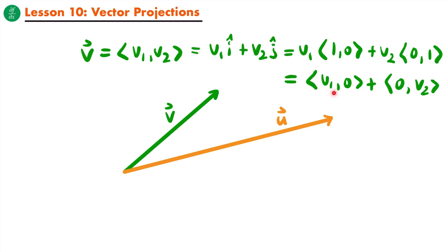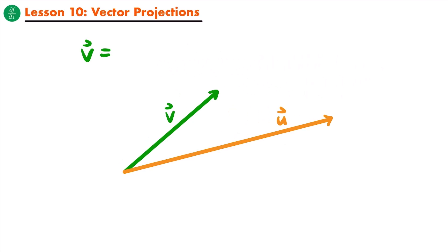Now that's not really anything new — you've seen this before — but keeping this idea in mind is going to be helpful for understanding what we're focusing on in this lesson. What we're going to want to do is break up a vector into two vector components, but not necessarily involving the standard unit vectors. Instead, we're going to represent a vector as the sum of two vector components determined by considering another vector. And that takes us to this diagram, where we have two vectors, vector v and vector u, starting at the same initial point but ending at two different terminal points. We want to represent vector v as the sum of two vector components where one is parallel to vector u and the other is perpendicular to vector u.